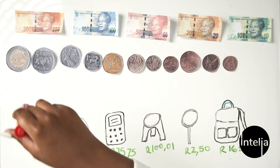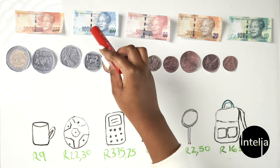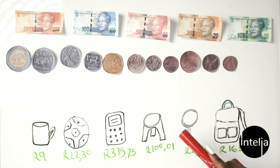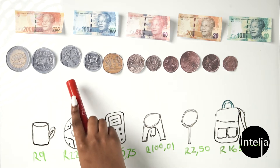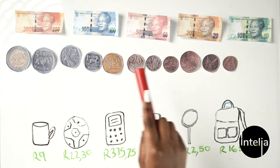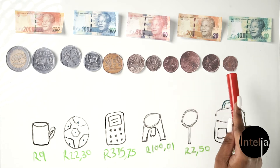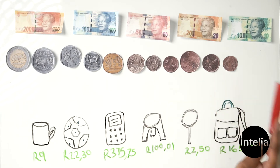We can find money in the form of banknotes and coins. As you can see, you have your 200 rand notes, your 100 rand, your 50, your 20, your 10, your 5 rand, 2 rand, 1 rand, 50 cents, 20 cents, 10 cents, 5 cents, 2 cents, and 1 cent.